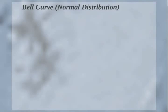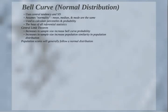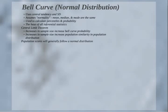So let's take a dive into the bell curve. The bell curve uses central tendency and standard deviation. It assumes normality, meaning that most of the scores are in the middle and some scores are outliers on the high side and on the low side. The mean, median, and mode are all the same — that's the assumption here. We use the bell curve to calculate percentiles and probabilities based on z-scores, and again, this is the basis for all inferential statistics.